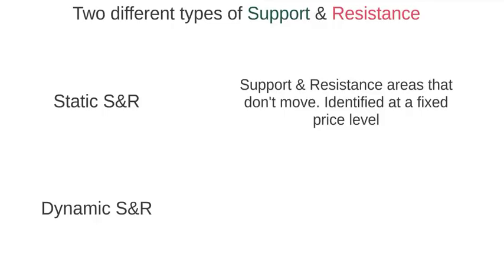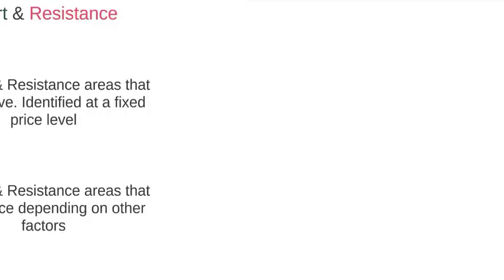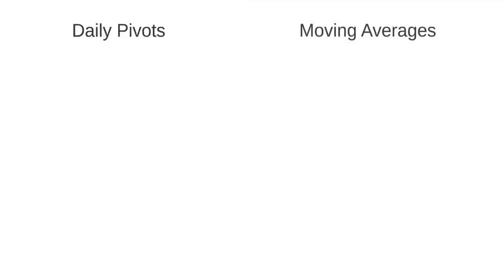Dynamic support and resistance is the opposite — it refers to support and resistance levels that move; they are not at a fixed price. I use two types of dynamic support and resistance as part of my trading strategy, which are daily pivots and moving averages, and these levels change regularly.